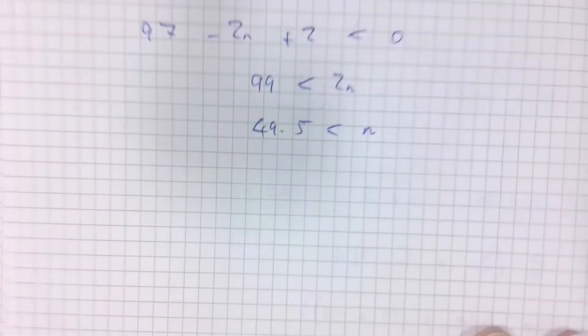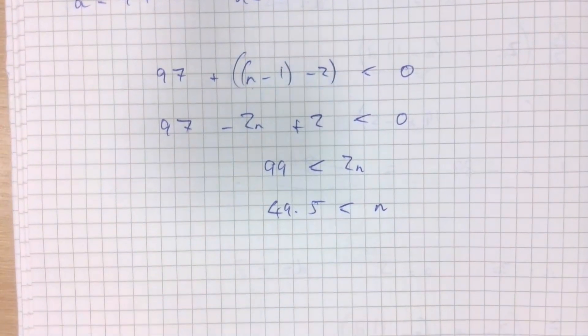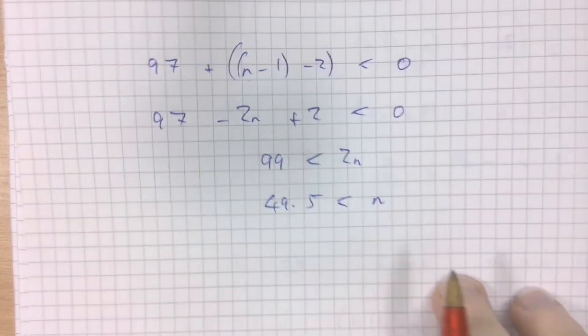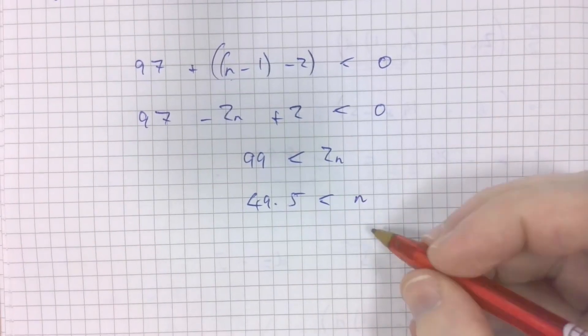Let's work it out. 97, that's n times negative 2, minus 2n plus 2, bigger than 0. So if I add 2n to both sides, 99 has to be smaller than 2n. So dividing both sides by 2, 49.5 has to be smaller than n in order for that to be the case.